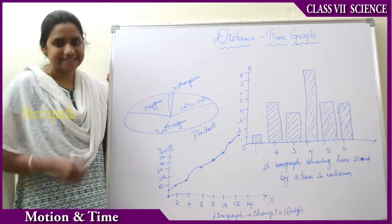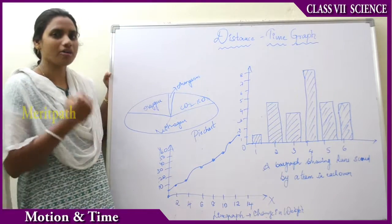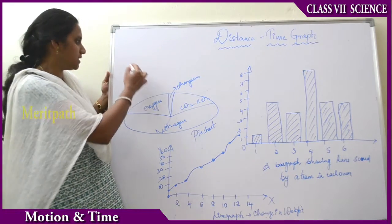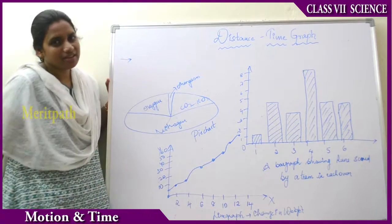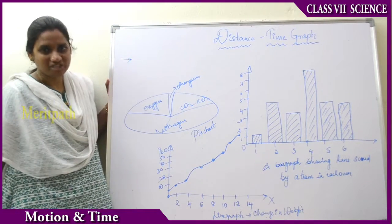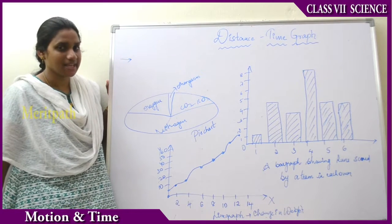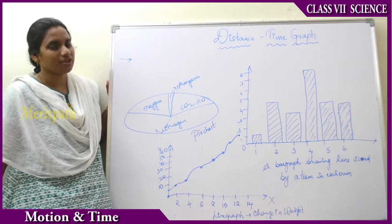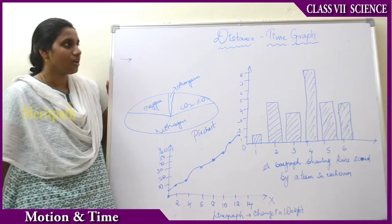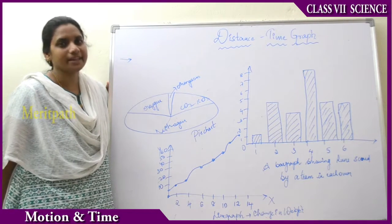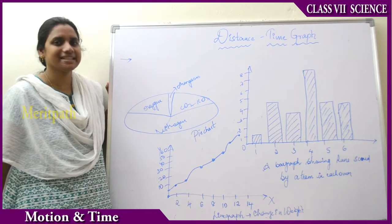Let us see the distance-time graph of some objects. Previously we have learned about measuring speed, distance, and time. Now we will be seeing how to plot graphs between distance and time.